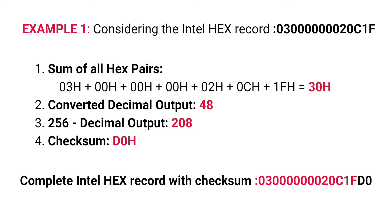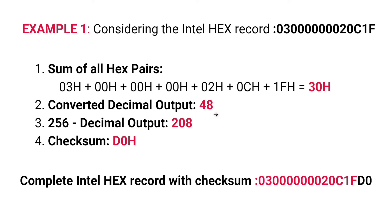Considering this with an example — using the same record but without the checksum: 03 0000 00 02 0C 1F. After dividing into hexadecimal pairs we get: 03, 00, 00, 00, 02, 0C, and 1F. Adding all these hex pairs results in 30H — that is step one. In step two, the hexadecimal sum 30H is converted to decimal, giving us 48. In step three, this decimal output is subtracted from 256, resulting in 208.